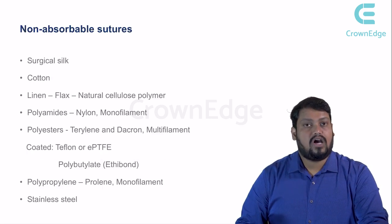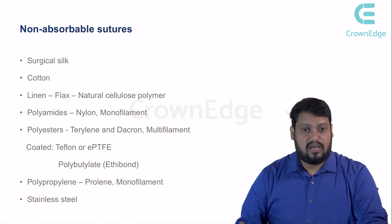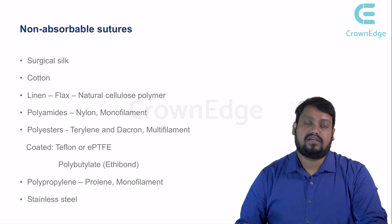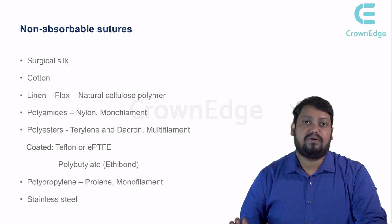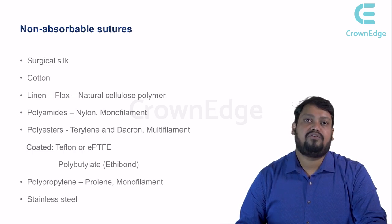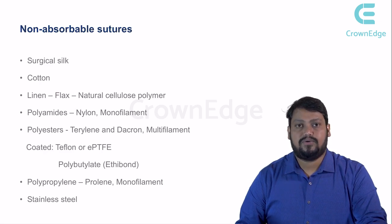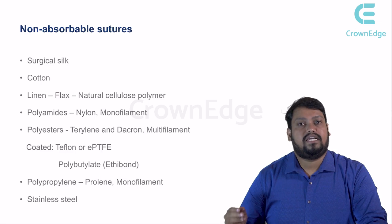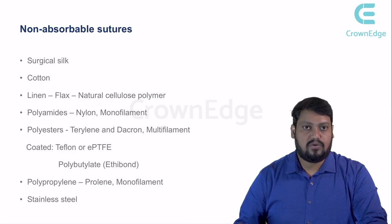Non-absorbable sutures include surgical silk, cotton or linen, and polyamides such as nylon, which are monofilament. Polyesters come as terylene and dacron, which are multifilament and are basically coated. Coating is of two types: Teflon and polybutanate. Teflon generally undergoes flaking during sterilization procedures and when used in deep acidic tissues, so polybutanate is preferred as the coating material these days.